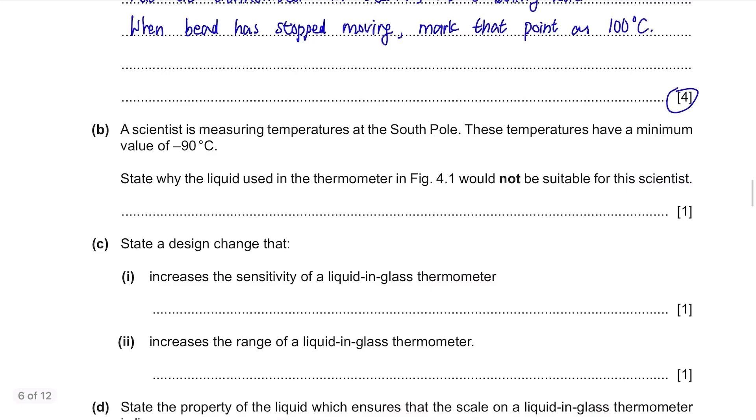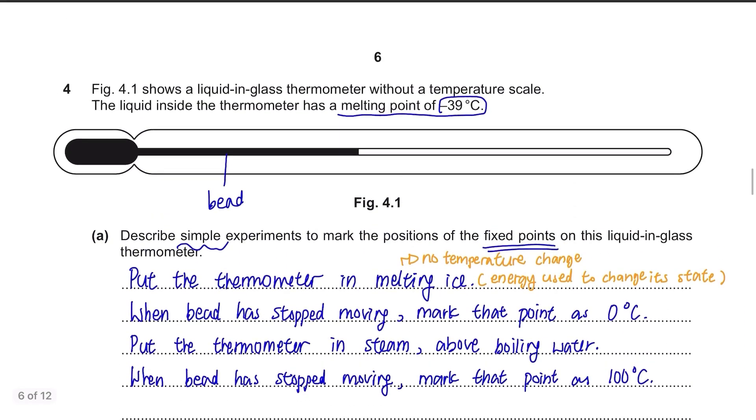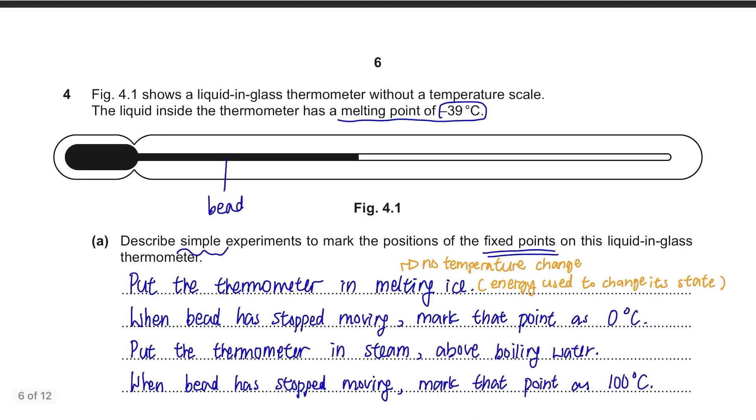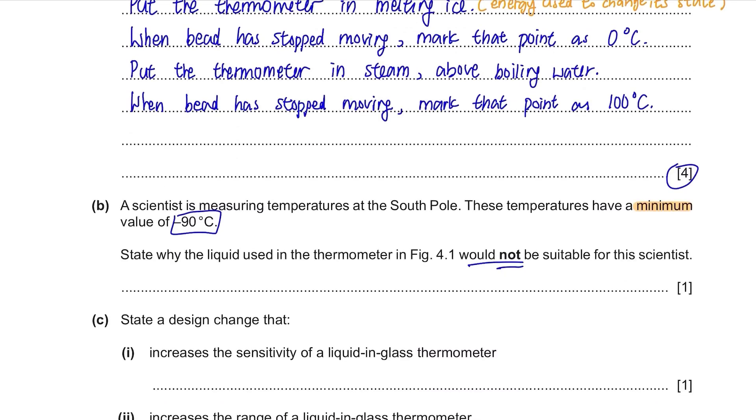Part B. A scientist is measuring temperatures at the south pole. These temperatures have a minimum value of negative 90 degrees Celsius. State why the liquid used in the thermometer in figure 4.1 would not be suitable for this scientist. In the first part of the question, it mentioned that the melting point is negative 39 degrees Celsius. If this is brought to the south pole where the minimum temperature is negative 90, it's going to freeze and won't be in a liquid state.